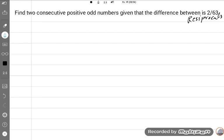We will discuss the techniques to read this question carefully. Find two consecutive positive odd numbers given that the difference between their reciprocals is 2 upon 63. So I write some numbers and start a conceptual discussion.